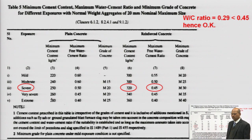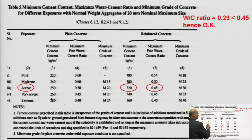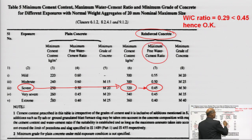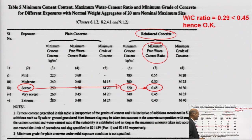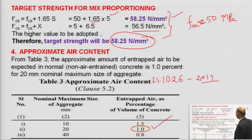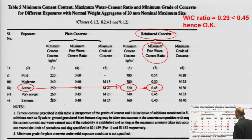We must also consider the durability criteria. Our exposure condition is severe for RCC work. As per IS 456 table 5, minimum cementitious material is 320 kg/m³ and maximum free water-cement ratio is 0.45. From strength criteria we get 0.29, and from durability criteria 0.45. Since 0.29 is less than 0.45, we adopt 0.29 as the water-cement ratio.